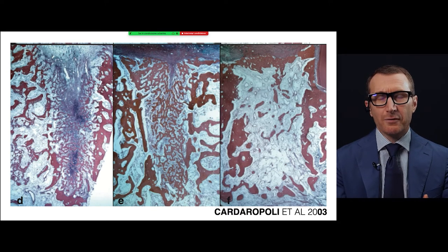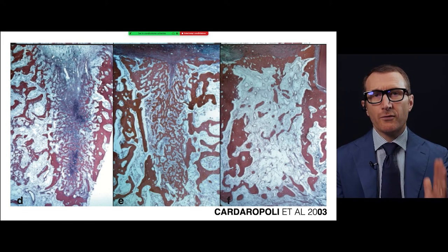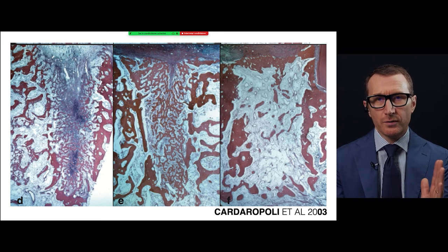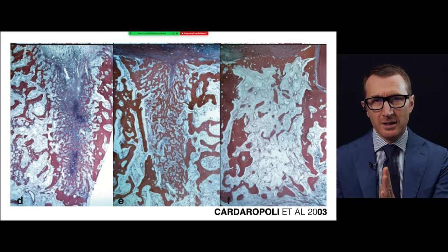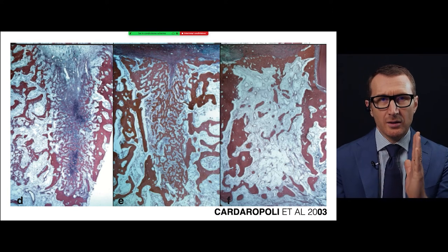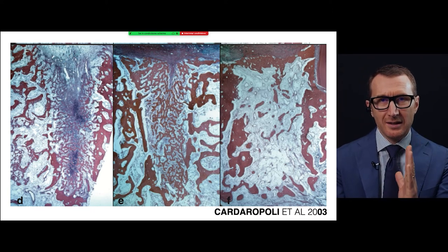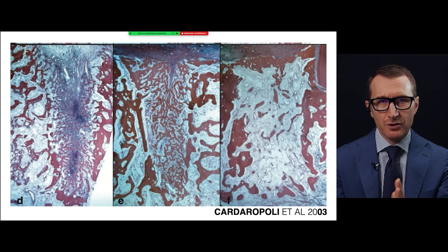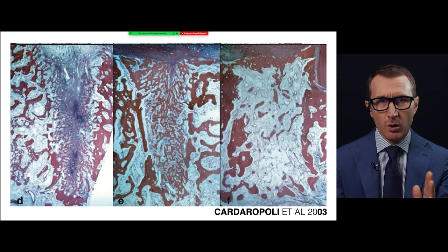The bone grows from the walls of the defect towards the middle. First we have coagulant formation, then provisional matrix formation, and then woven bone formation — like different waves.